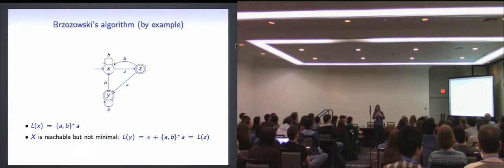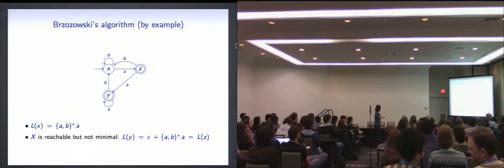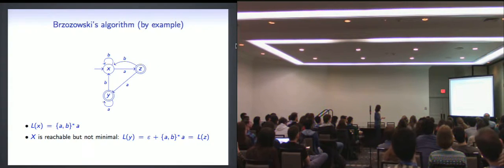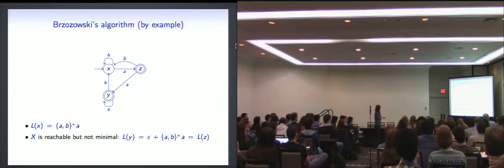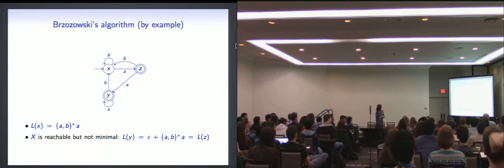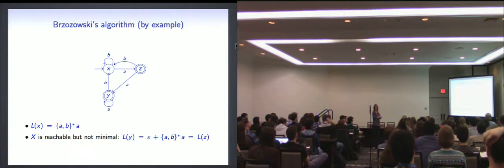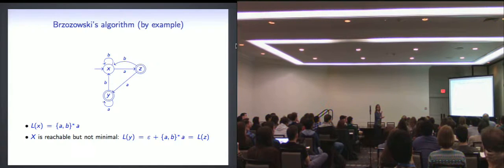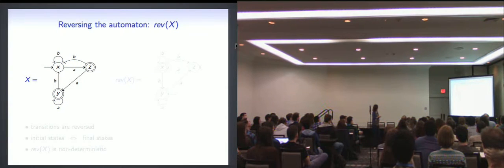So this is a three-state automaton. And if you stare at it for a couple of seconds, you'll see that state X, the initial state, accepts the language of words that finish with an A. So all the arrows with A's here lead to a final state. And all the arrows with B go back to X, which is a non-final state. Okay? So this automaton is reachable in the sense that if I start from the initial state X, I can get to any other state. So there are no dead states in there. That's good. But it's not minimal. So actually, the states Z and Y, they do the same thing. So it's useless to have both of them. One of them would be enough.